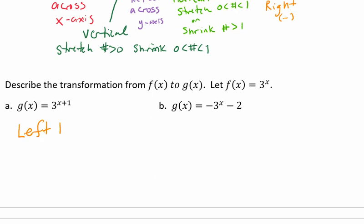Let's take a look at letter b. Here, we have g of x equals negative 3 raised to the x minus 2. In this example, we have a negative in the front of the 3 and a minus 2 at the end. So our negative in front of the 3 is going to represent a reflection across the x-axis. And our minus 2 at the end, because it's not in the exponent, is the k value, which means it's also going to go down 2 units.